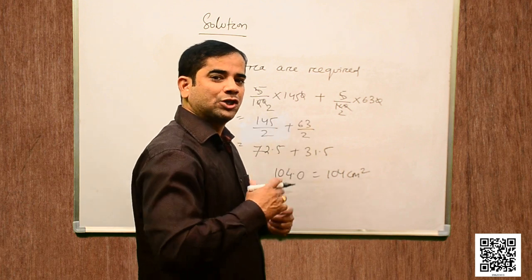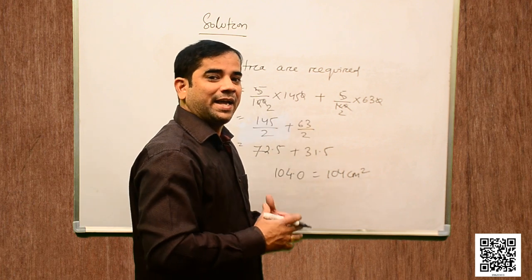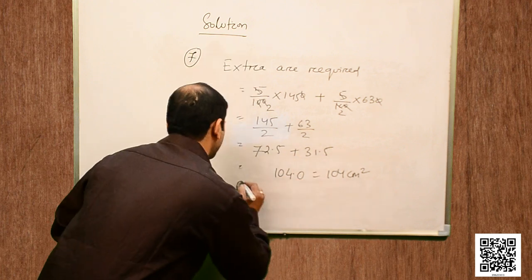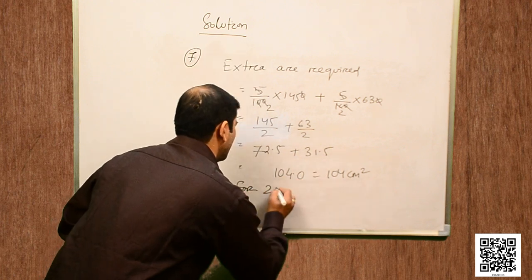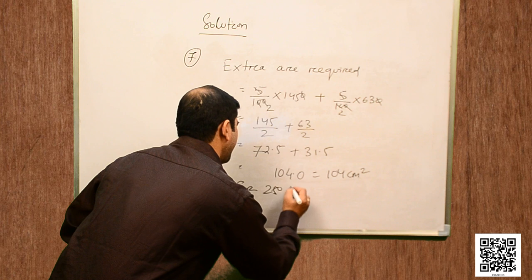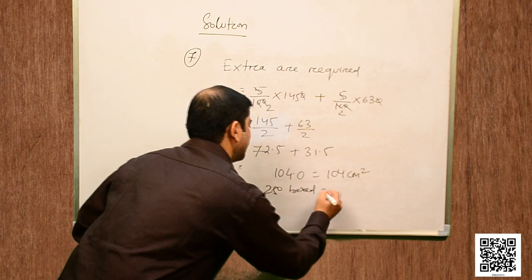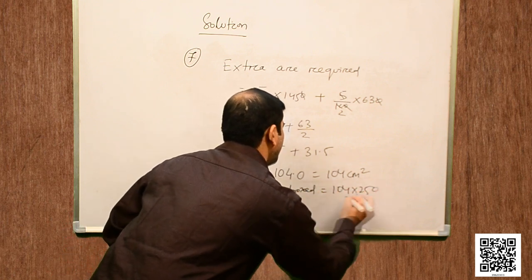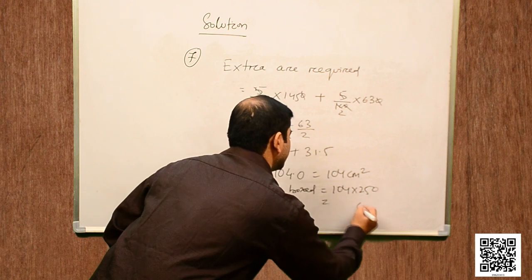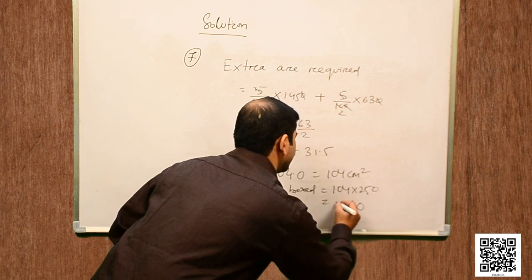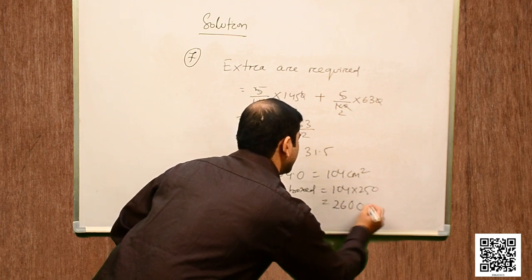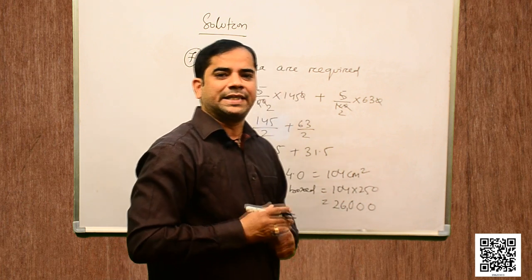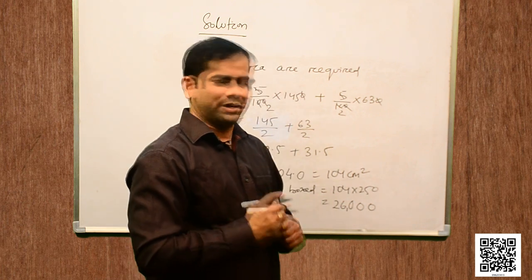For 250 boxes, the extra overlapping area is 104 × 250 = 26,000 cm².